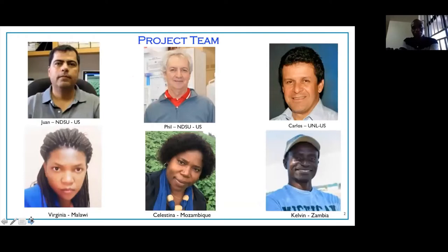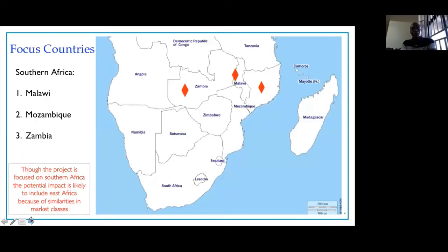To introduce the project team: we have Professor Wan Osono, who's the lead PI for the project and is based at North Dakota State University. Then we have co-PI Dr. Phil McLean, who's also at NDSU in the US. Then we have Carlos Urea, who's at University of Nebraska. And then we have Virginia Chisale, who's the bean breeder for the national program in Malawi, and Celestina, who's the bean breeder for the national program in Mozambique. And myself, Kelvin Kampfer, who's the bean breeder here at the University of Zambia.